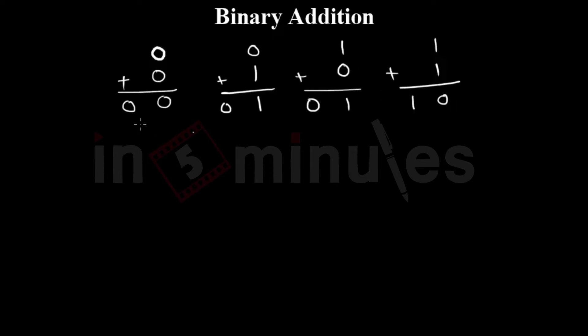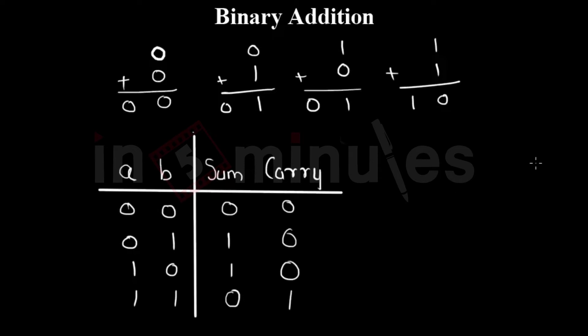Now let's quickly tabulate these results. So we have two single bit numbers A, B, sum and carry are produced. The circuit which performs this operation, this addition, is called half adder.